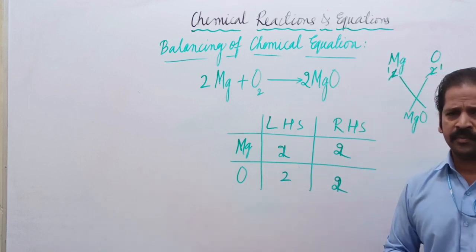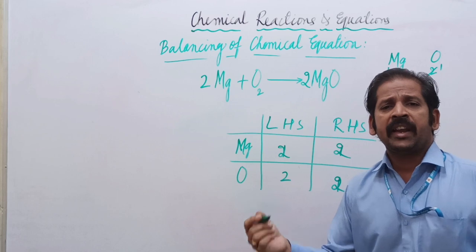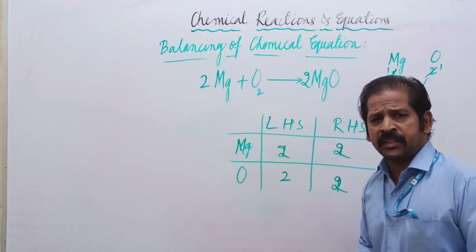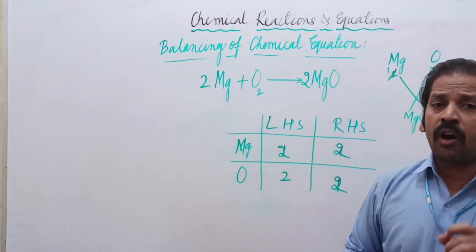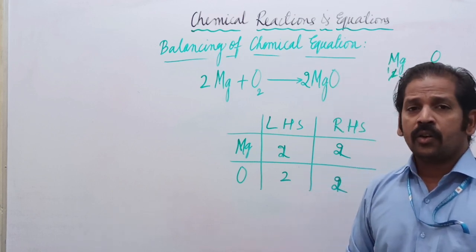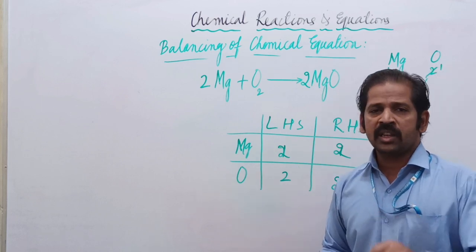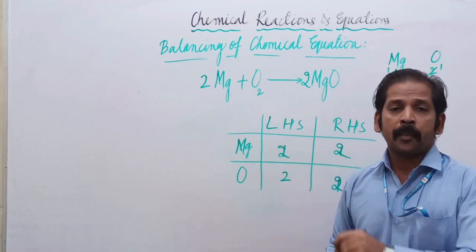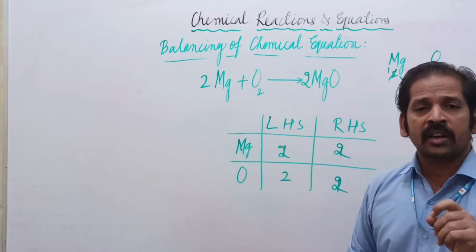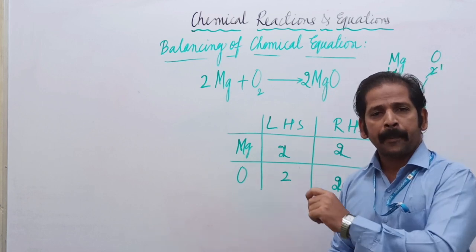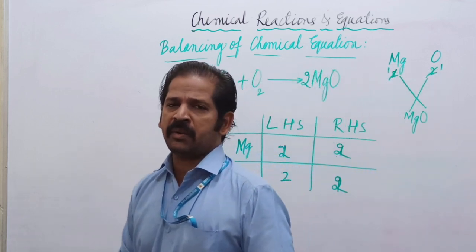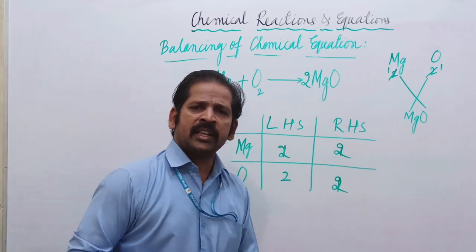To satisfy the law of conservation of mass, we have to balance the chemical equation. That is why we balance it. Next, we will go for the types of chemical reactions.